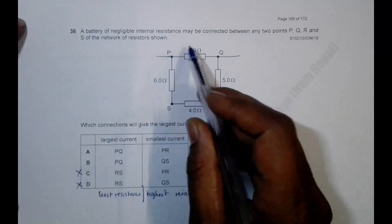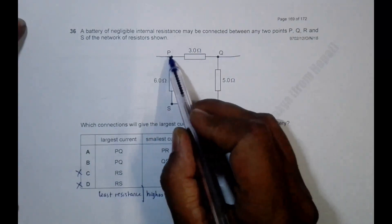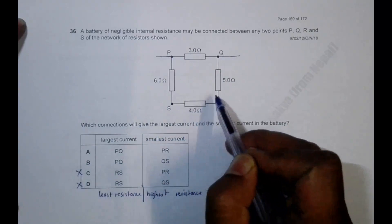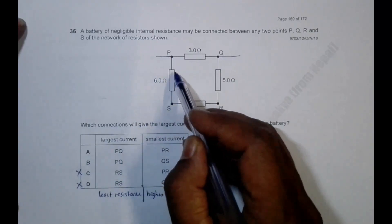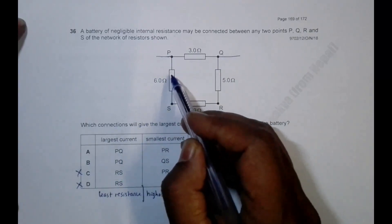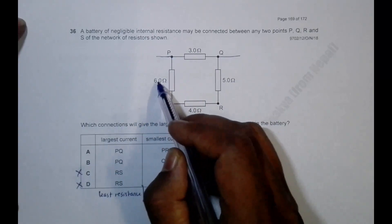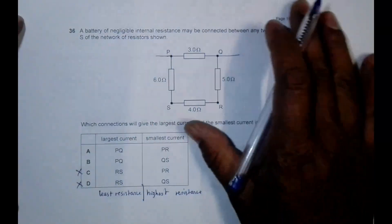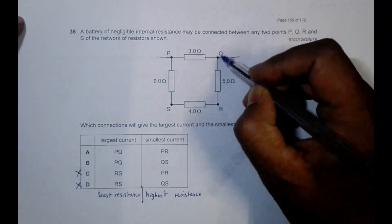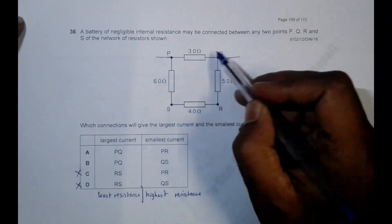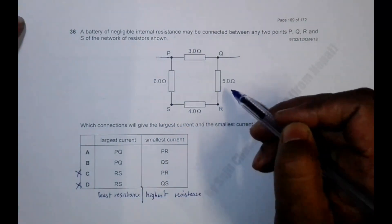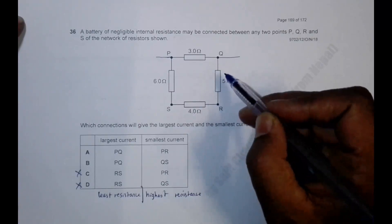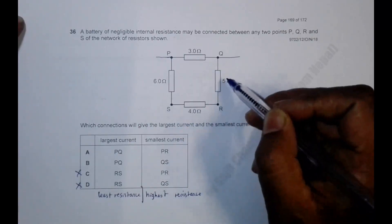Going through the connections again: across PQ it's less than 3, across here less than 6, others less than 4 and less than 5. But if I connect across S and Q, it will be 9 ohm in parallel with 9 ohm. The parallel of 9 and 9 is 4.5 ohm.